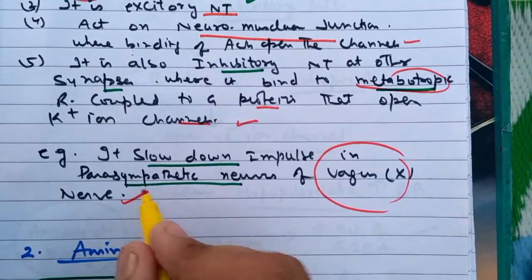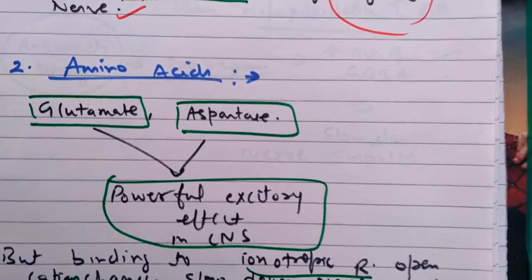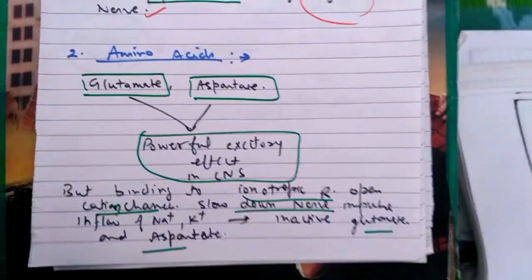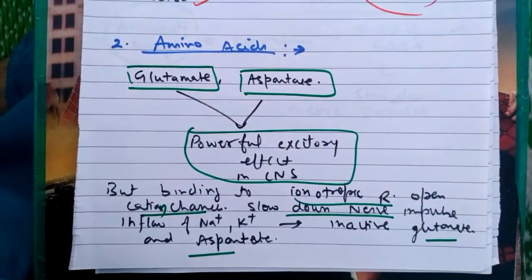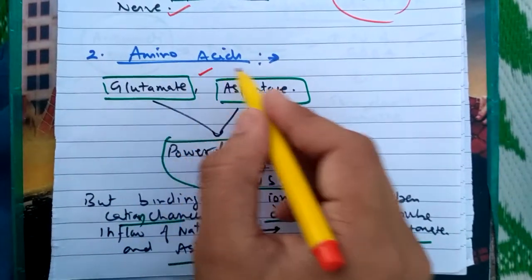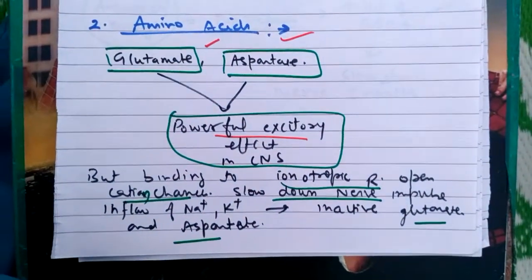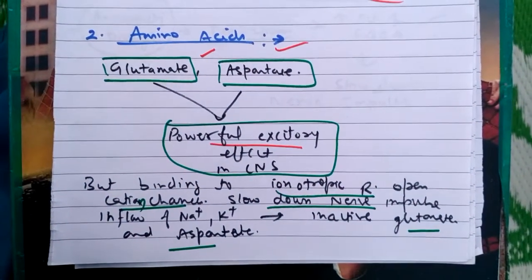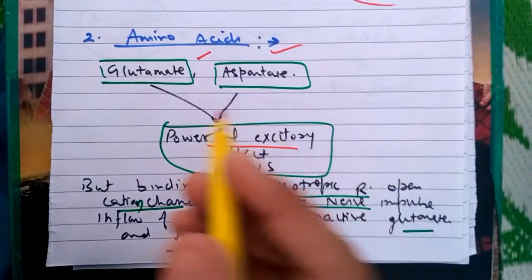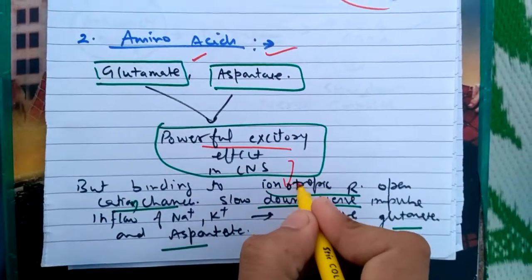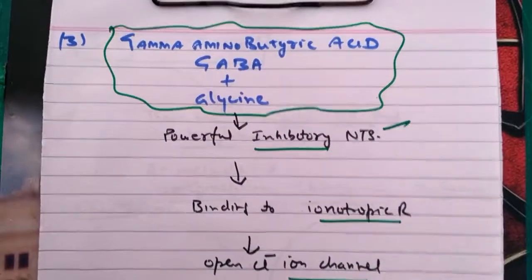The next type are amino acid neurotransmitters. Sometimes amino acids also act as neurotransmitters. Glutamate and aspartate have a powerful excitatory effect on the central nervous system, but binding to the ionotropic receptor opens the chloride channel and slows down the nerve impulse, so when binding at the ionotropic receptor they act as neuro-inhibitors.